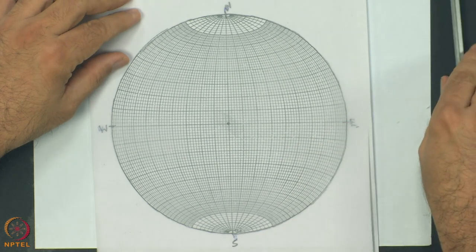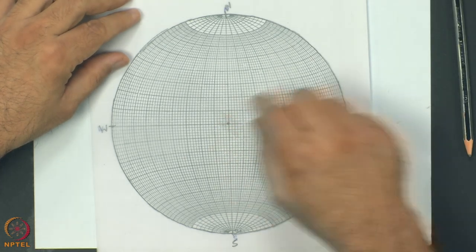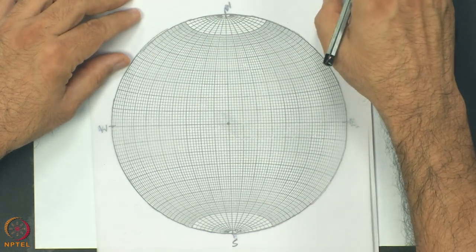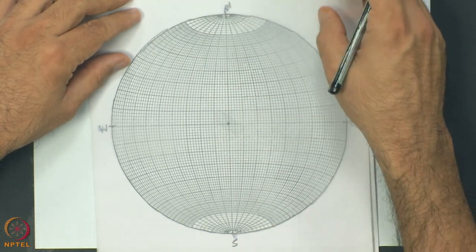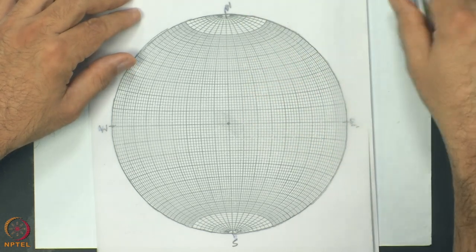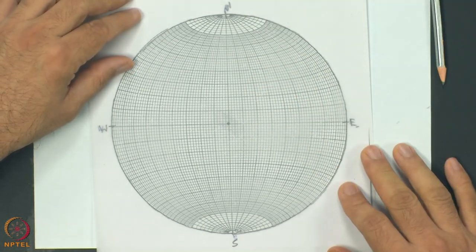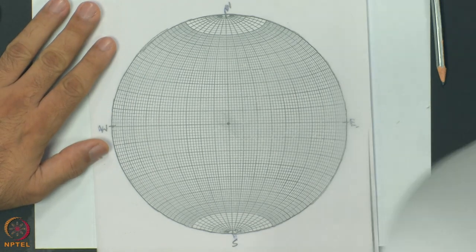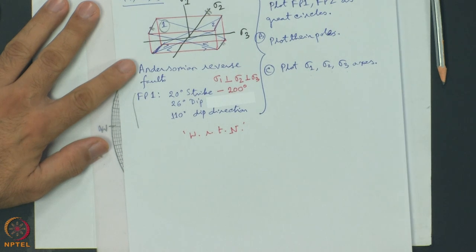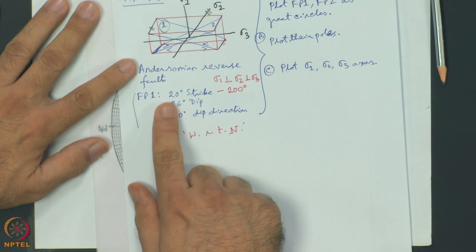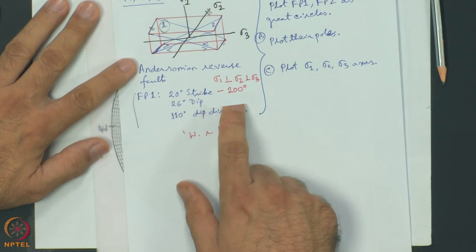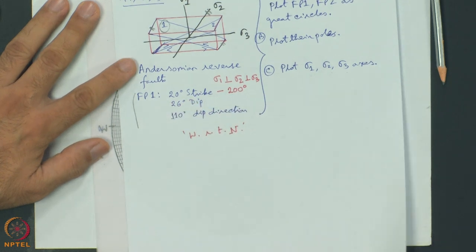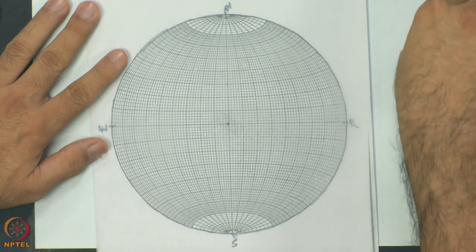In some stereonet exercises you will find they put a pin and rotate the tracing sheet with respect to that pin. The alternate is to rotate without a pin, which I will show you. Recollect the data set: fault plane 1 has 20 degree strike and the other direction is 200 degrees. So I will mark 20 and 200 on the stereonet.